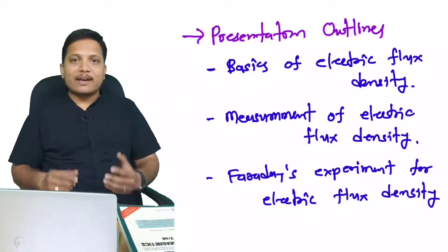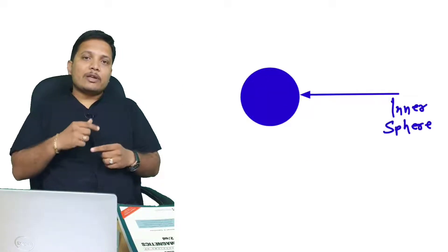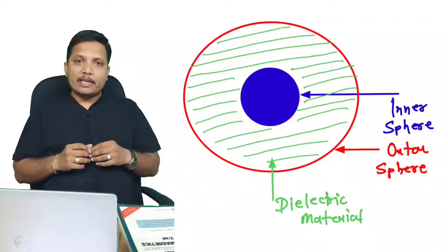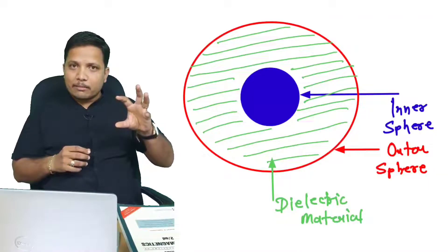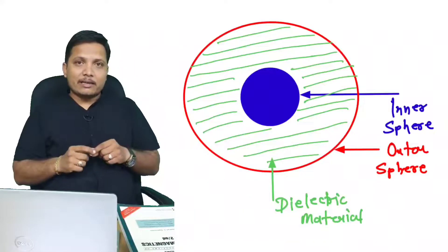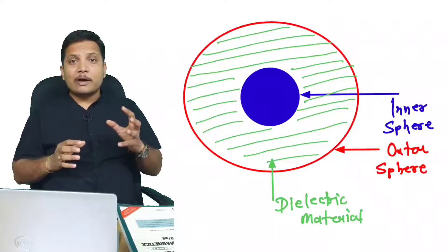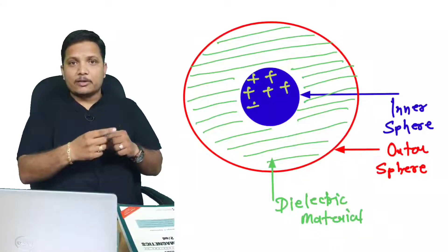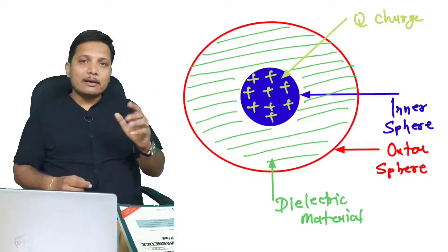Let us begin this session with Faraday's experiment, which explains electric flux density. Faraday performed an experiment in which he considered two metallic spheres — an inner metallic sphere and an outer metallic sphere — separated by a dielectric material. He placed a charge q on the inner metallic sphere.